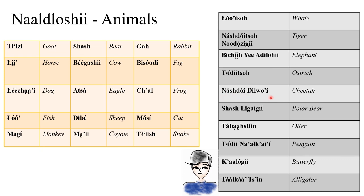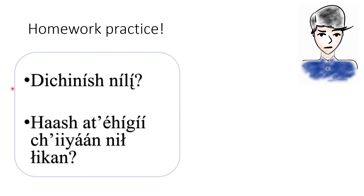For example: 'Na shdui del wo e, Na shdui del wo e.' So go ahead and figure out some kind of way to make it easier for you to understand the high tones and low tones.